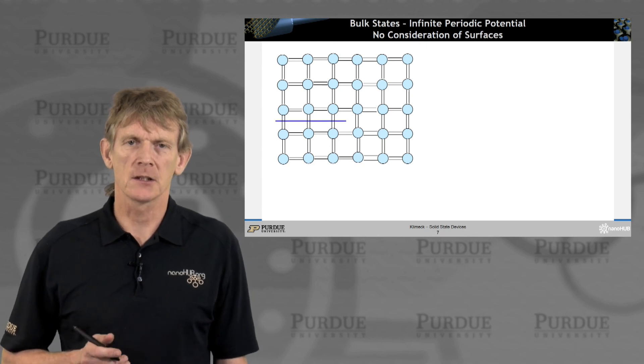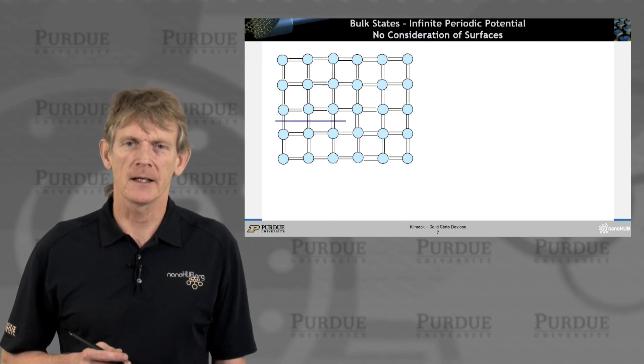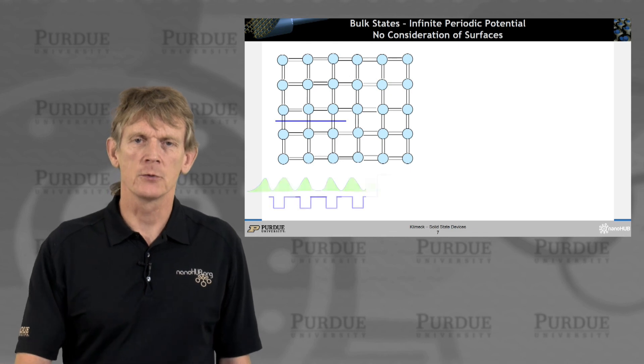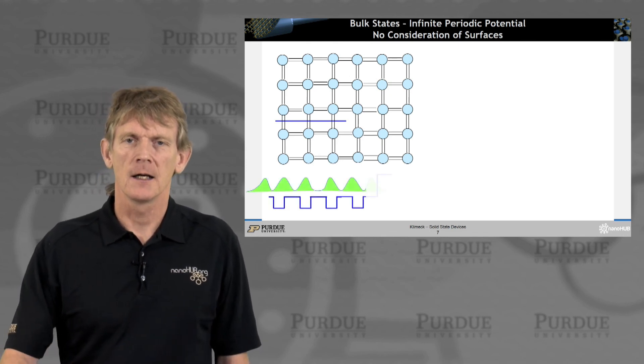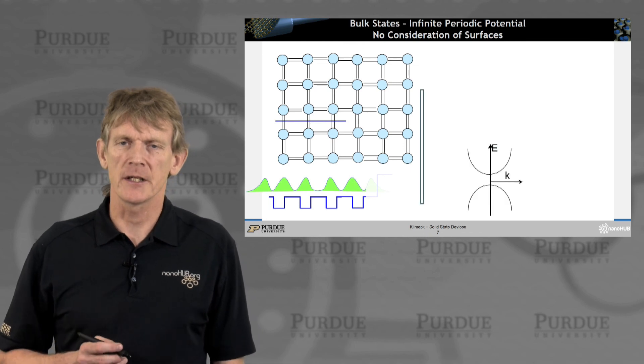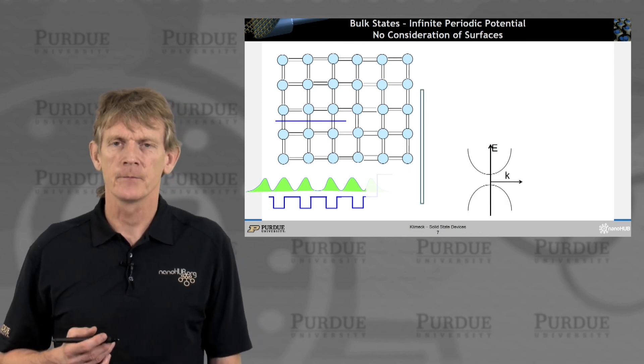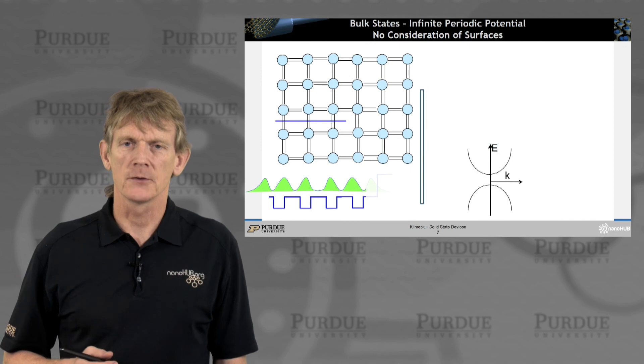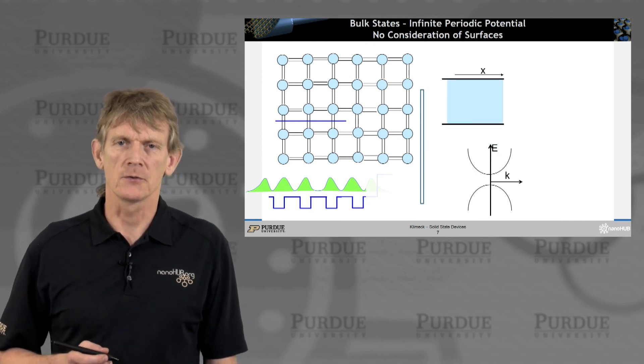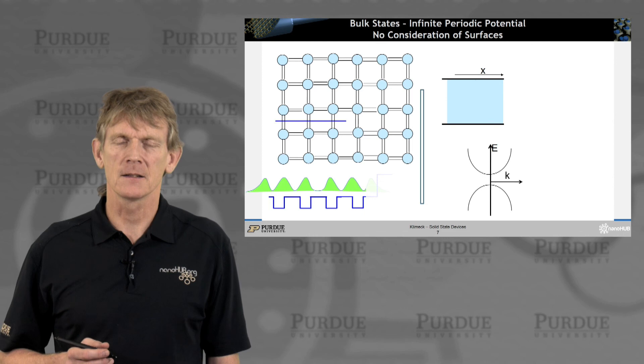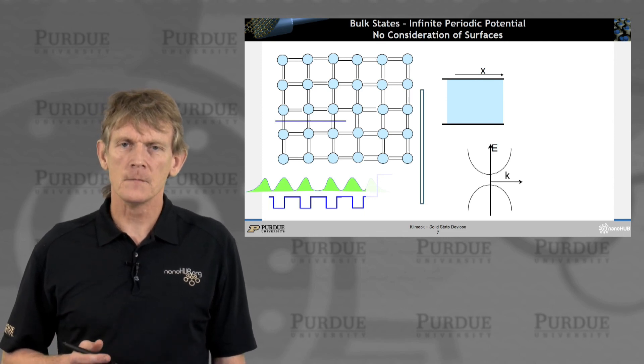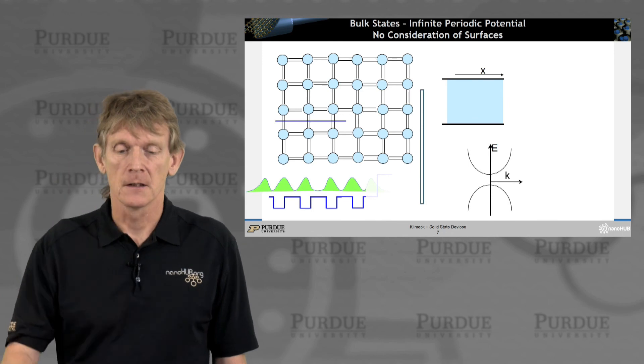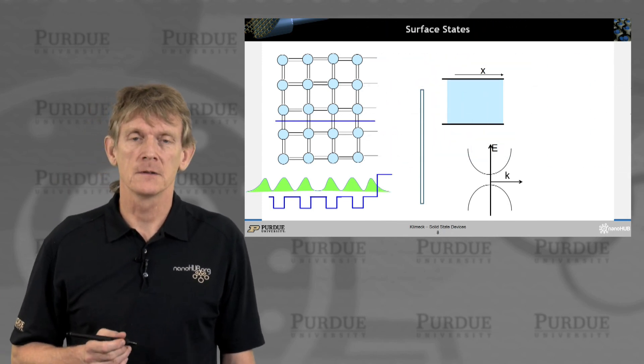We might have considered a crystal like this, and we drew this periodic potential. We even drew some wave functions. There was a derivation of an EK diagram, which then allows us to consider band edges. We began to draw devices like this, where there is a spatial dependent band edge.